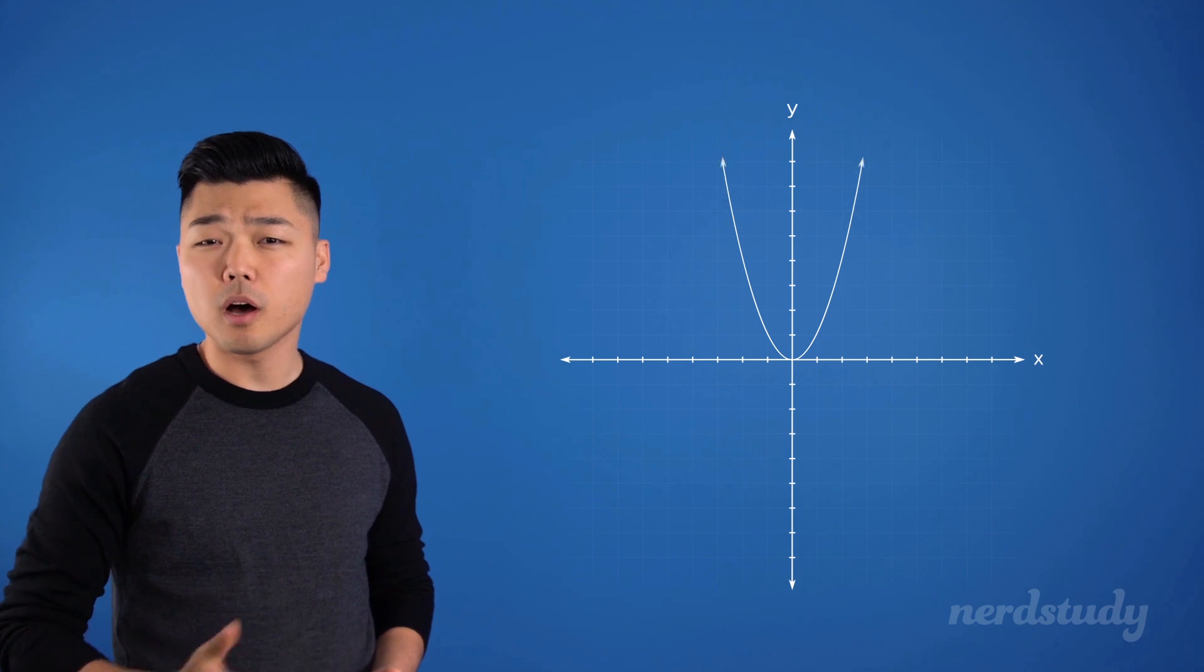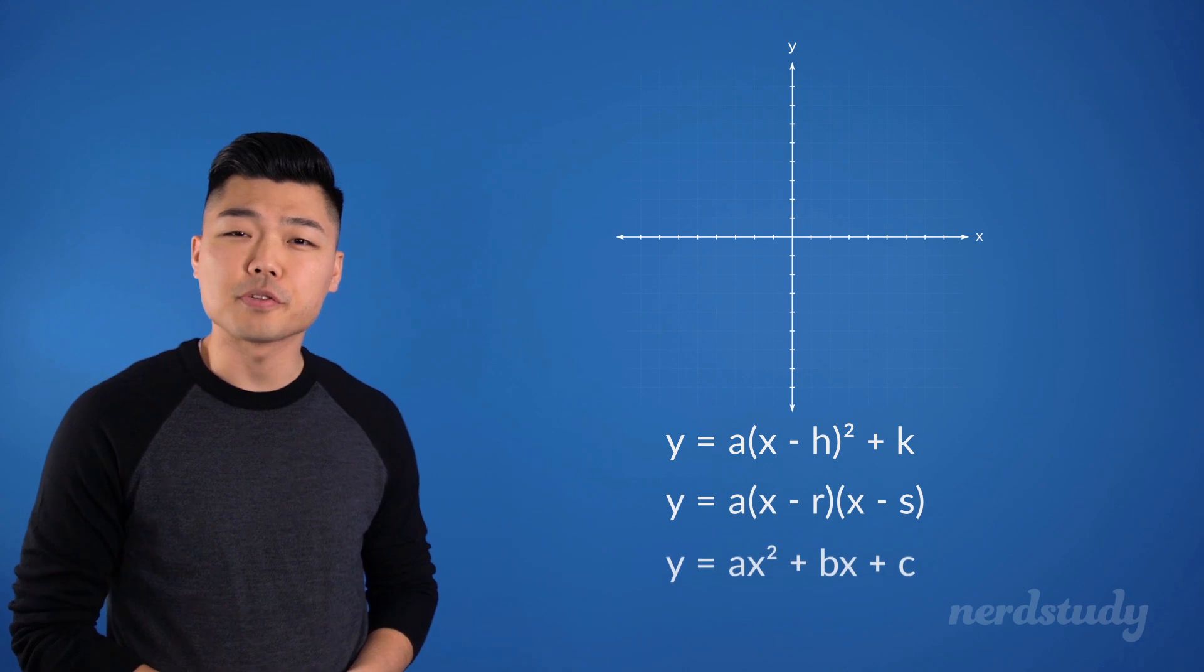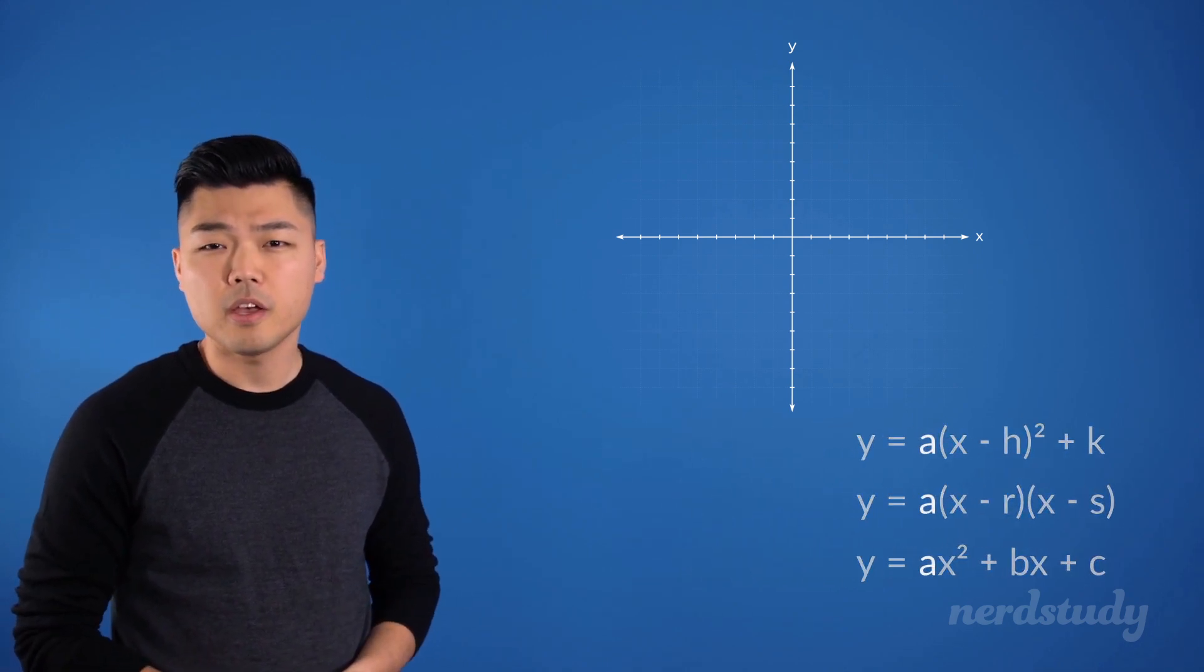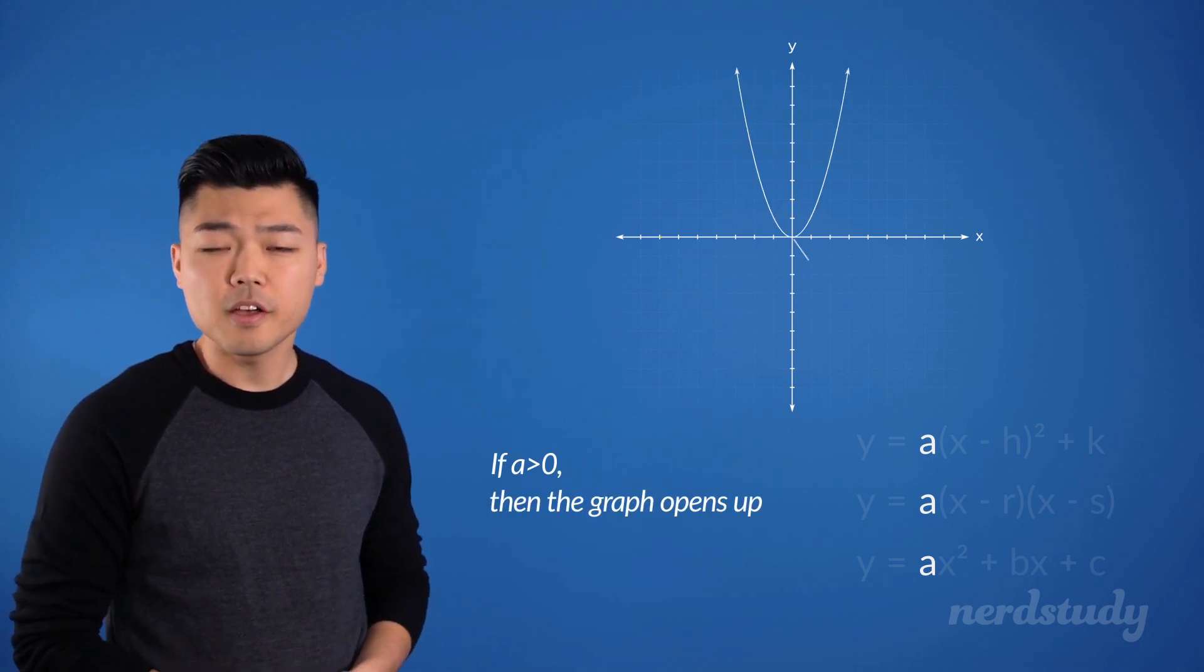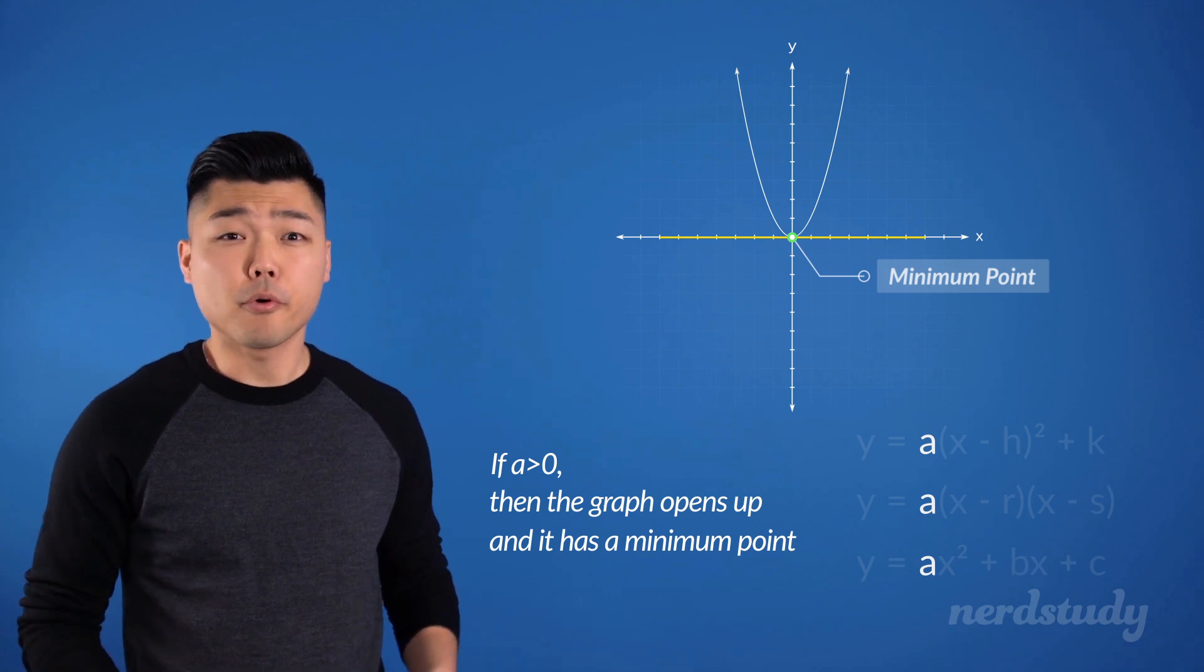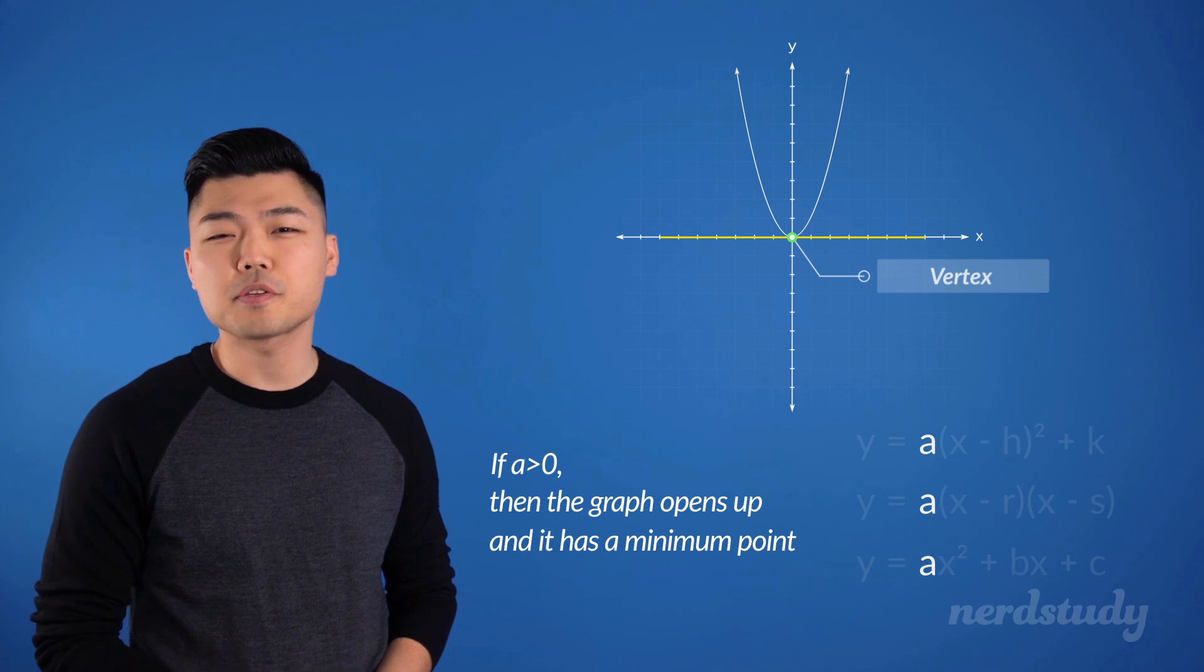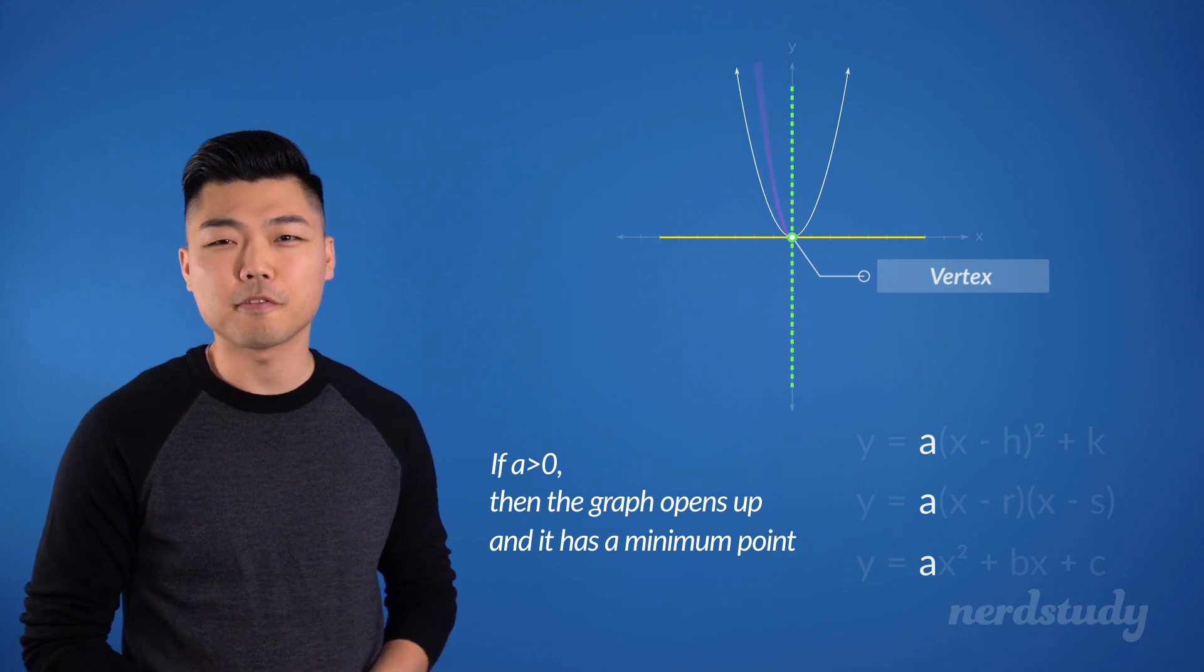So how do we know if a parabola is opening upwards or downwards? In these different forms of equations, the a will tell us the direction of the graph. If a is positive, then the graph is opening up. And as you can see, there is a minimum point where the graph never goes lower than that point. And of course, that point is called the vertex. And the vertex also happens to be in the dead middle of the parabola, separating the symmetry of the graph.